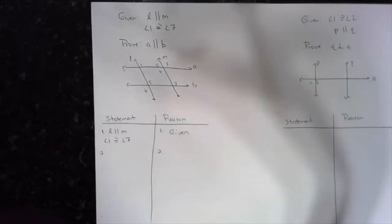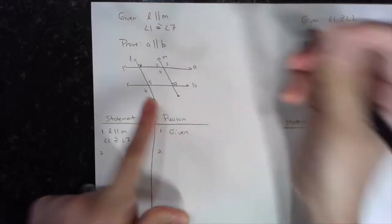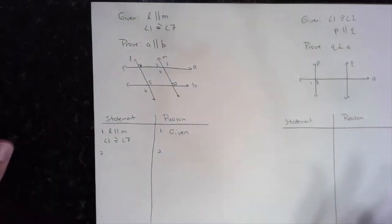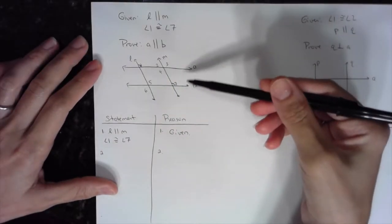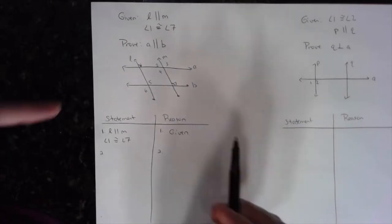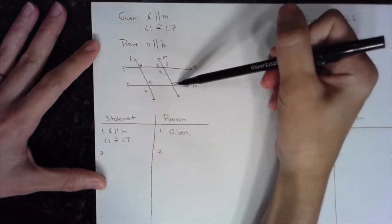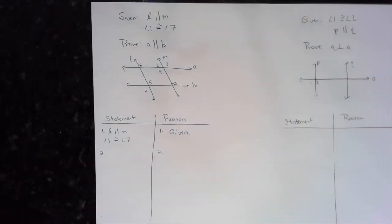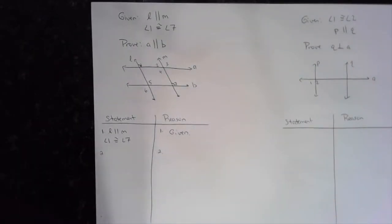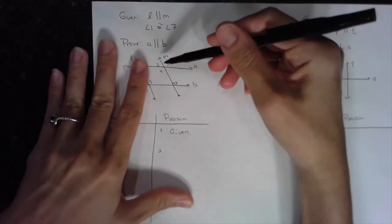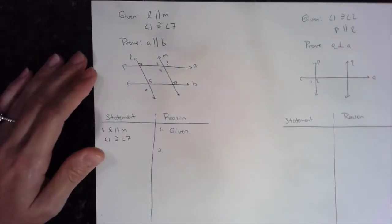Now I want to think ahead. I know these two lines are parallel and angle one is congruent to angle seven. To prove A is parallel to B, I need to work my way into proving, for example, that angle four is congruent to angle seven — because those would be alternate interior angles between A and B. I only have alternate interior angles and things like that when I have two parallel lines and a transversal through them.